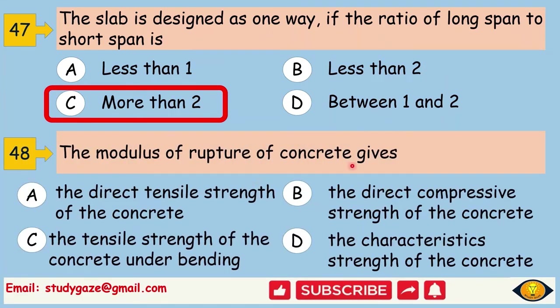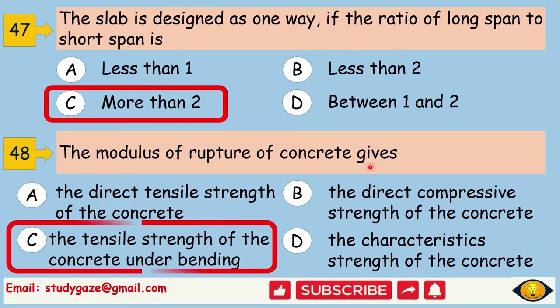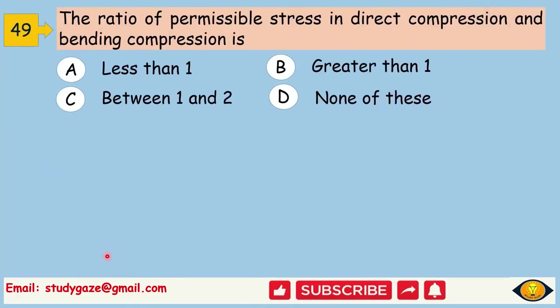The modulus of rupture of concrete gives the tensile strength of concrete under bending. The ratio of permissible stress in direct compression and bending compression is less than one.